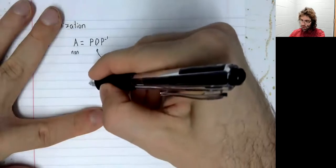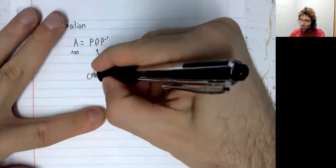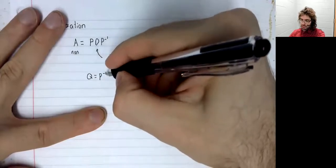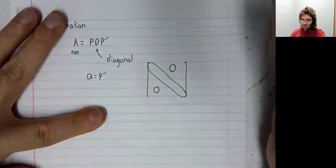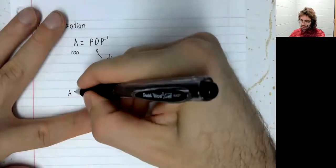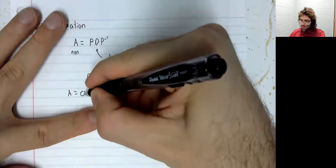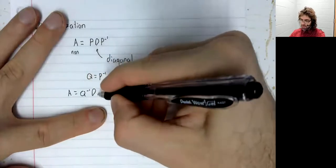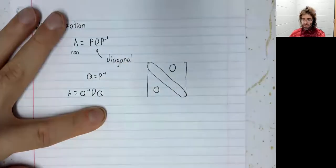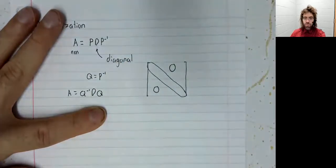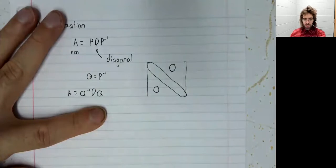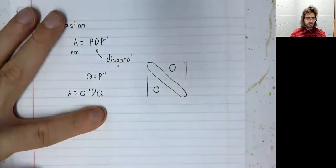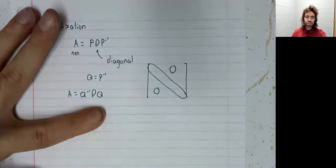and we call Q P inverse, then A is Q inverse times D times Q. So whether the inverse is on the left or on the right doesn't really change anything.